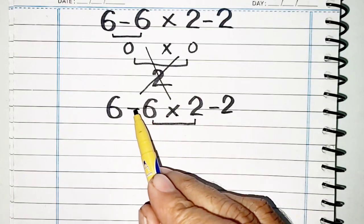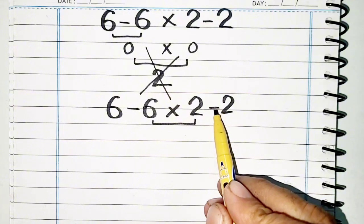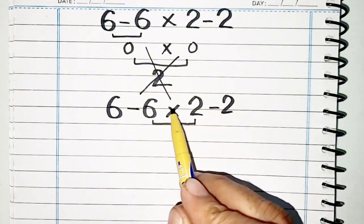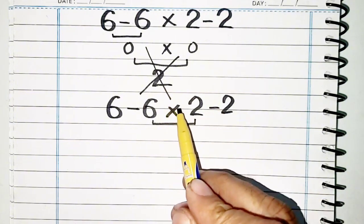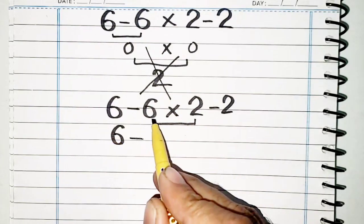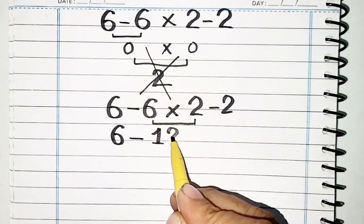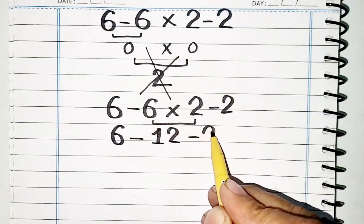Subtraction has lowest priority when there is multiplication, so we have to solve the multiplication first. 6 as it is, minus 6 times 2 will be equal to 12, and here is minus 2.